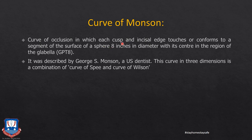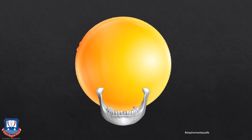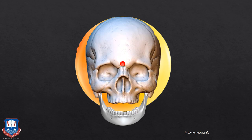The curve of Monson is three-dimensional and is a combination of the curve of Spee and the curve of Wilson. All these curves conform to a sphere 8 inches in diameter with its center at the glabella. The occluding surfaces of the mandibular teeth conform to this sphere. If viewed in the medial-lateral plane it is the curve of Monson; if viewed in the anteroposterior plane it is called the curve of Wilson.